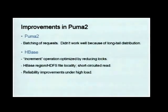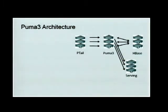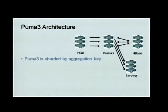However, we were still not very happy with the performance, especially on unique users and most frequent items. That's why we came up with a new architecture called Puma3, which is almost finished development and going online very soon. The major difference between Puma2 and Puma3 is that we do all aggregations inside Puma's memory instead of using HBase. To make that happen, Puma3 has to be sharded by aggregation key.